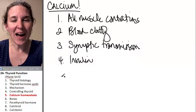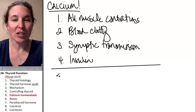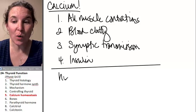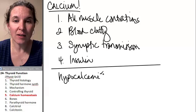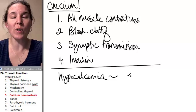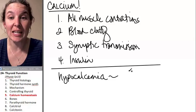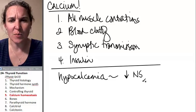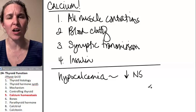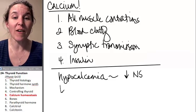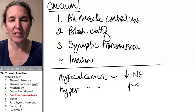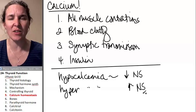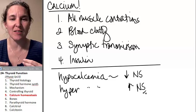And if you have low calcium, hypocalcemia, this results in a depressed nervous system. So things slow down, you're not as reactive. If you have hypercalcemia, you have increased nervous system reactivity. So you get twitchy and you get wonky.